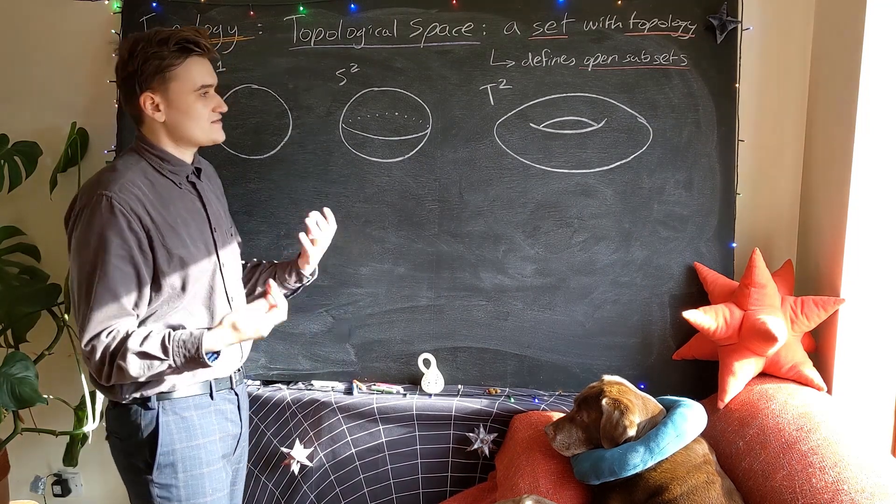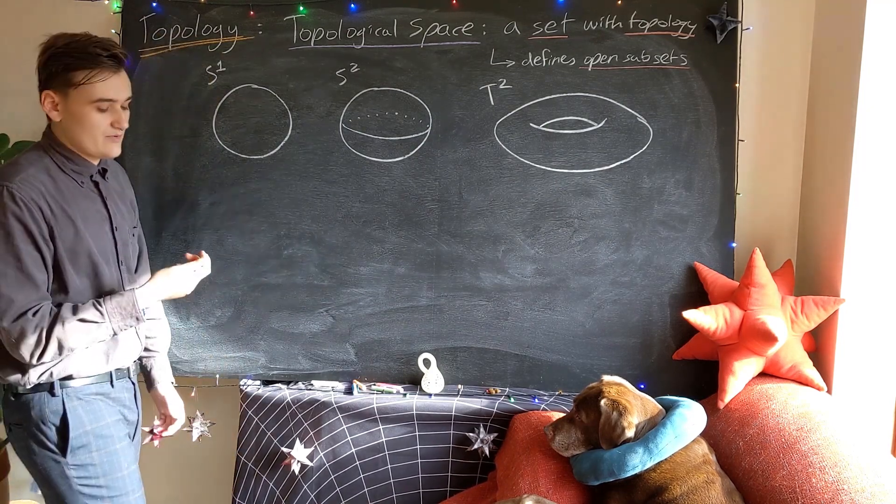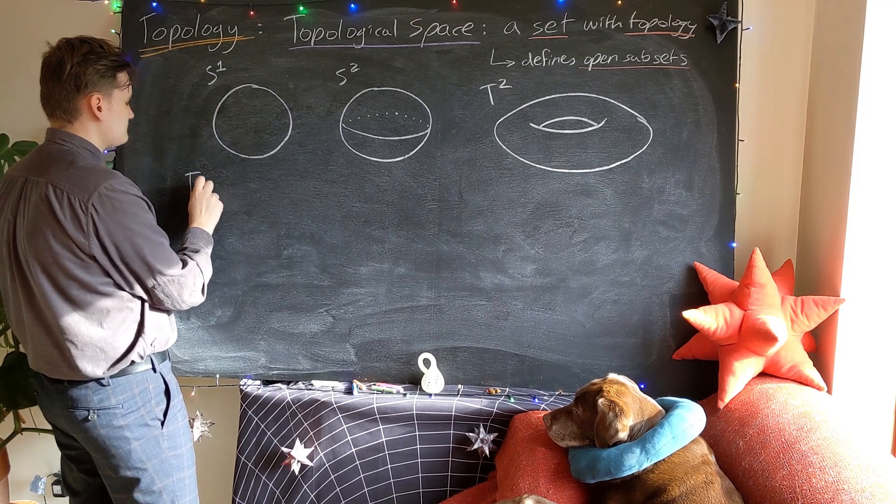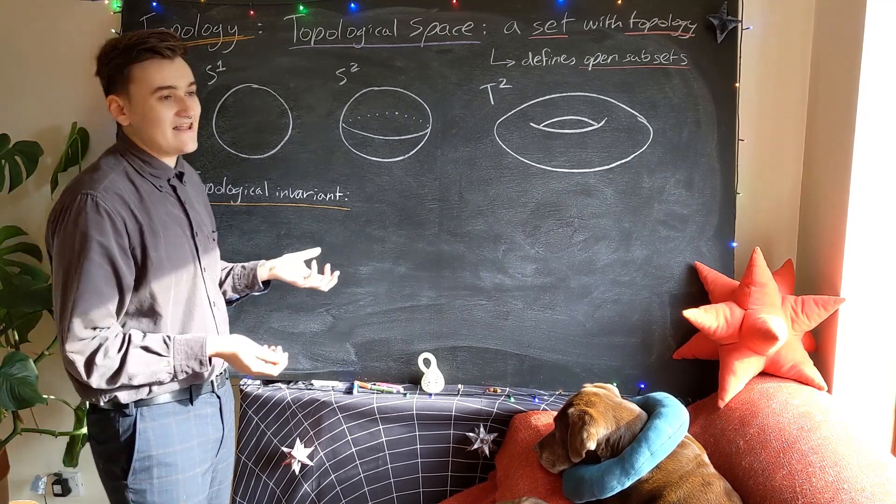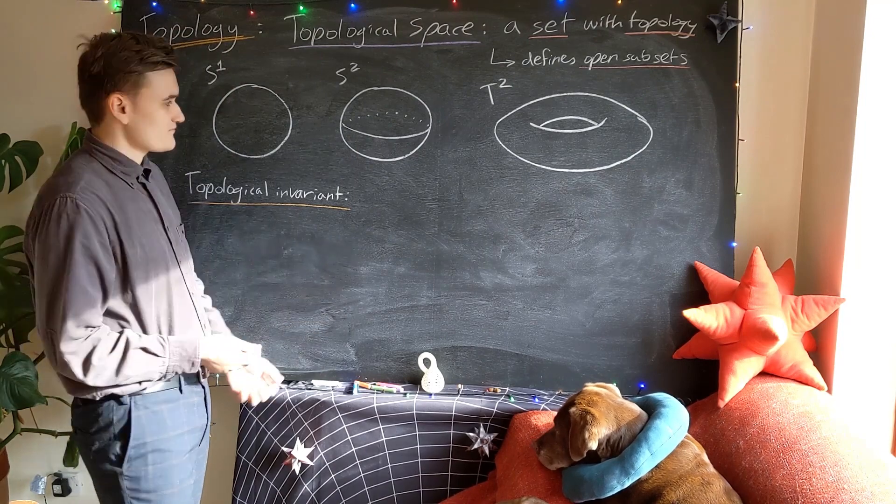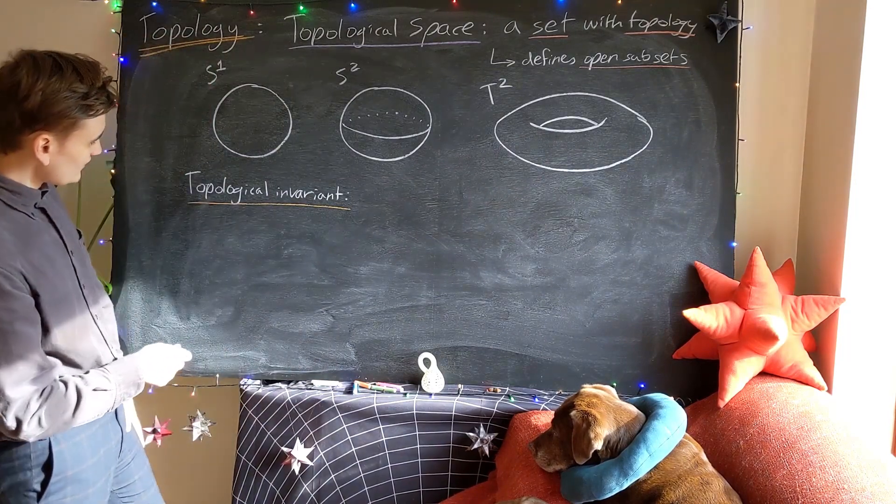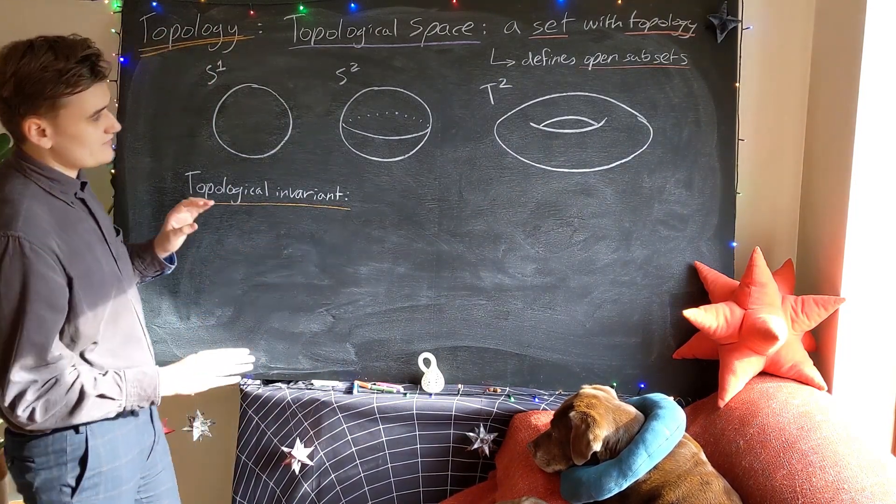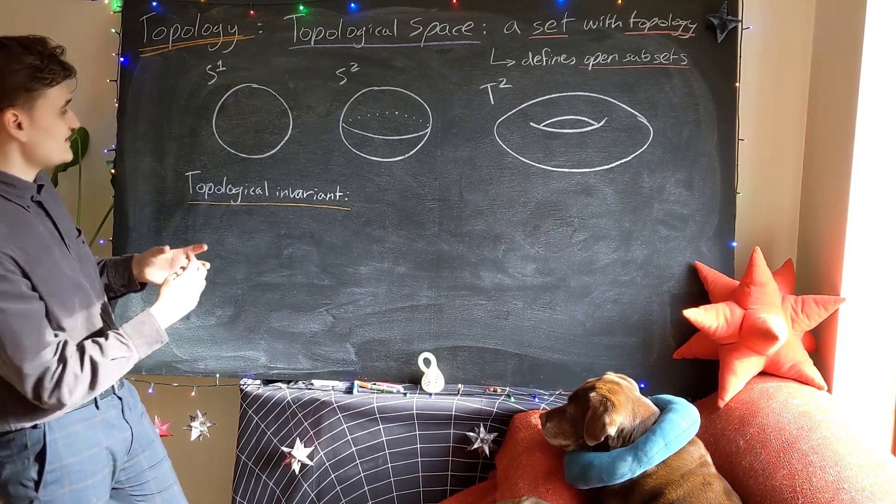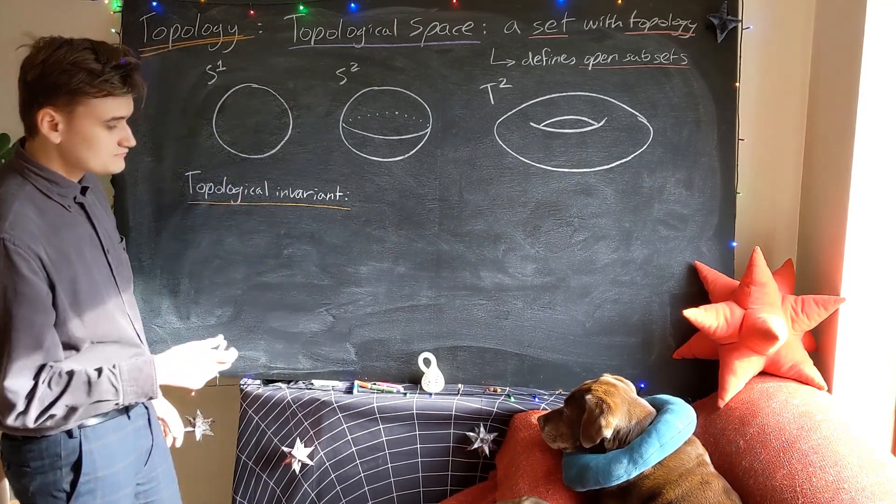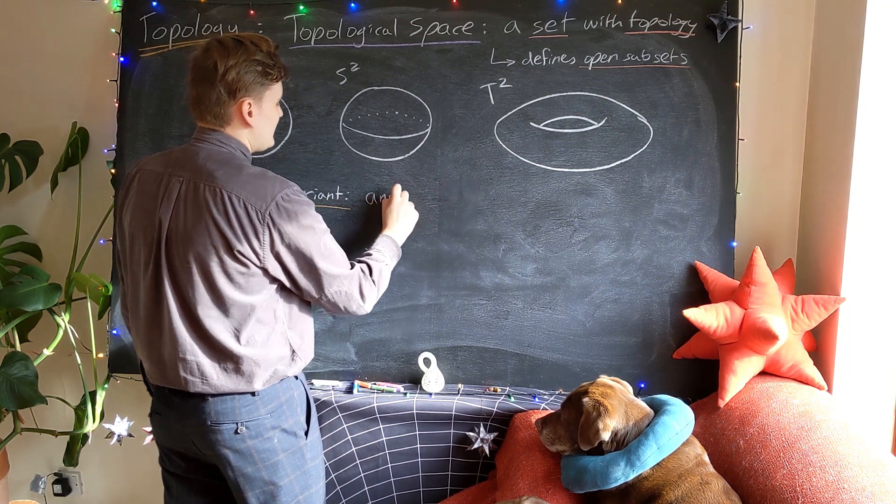And now what we want to do is come up with a way to talk about these topological spaces or their topological properties. So this is what we mean by a topological invariant. Essentially a topological invariant is potentially any kind of property that we could define on a topological space. It could be something like its dimension or the number of holes that it has. But the key point is, is that given two topological spaces, we should be able to look at their invariants and then conclude whether or not we can smoothly or continuously deform one into the other.